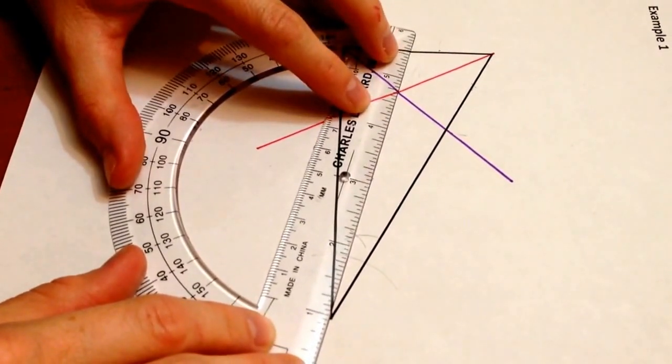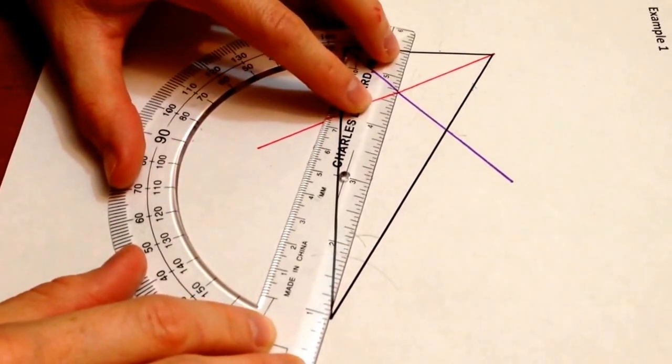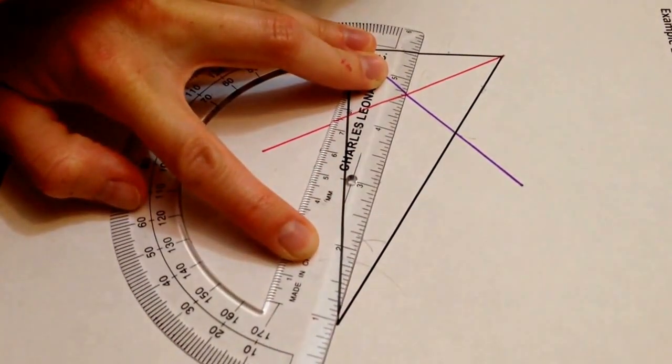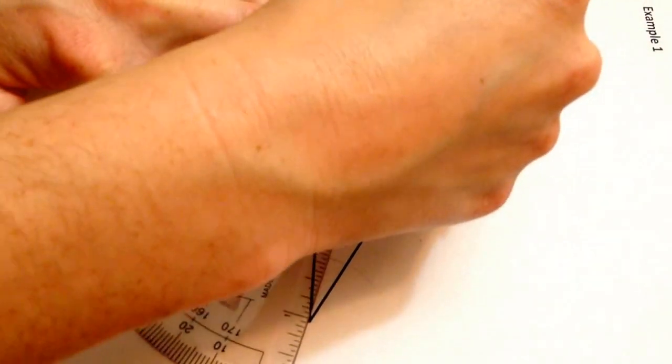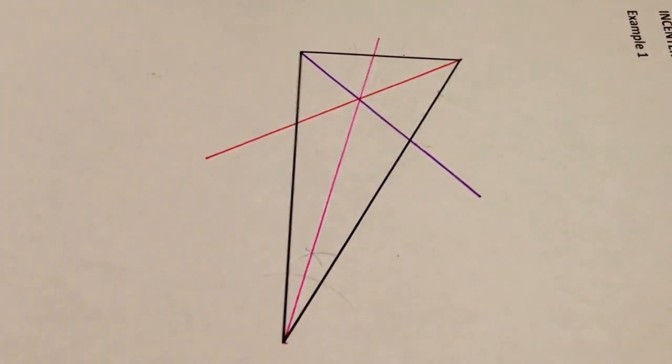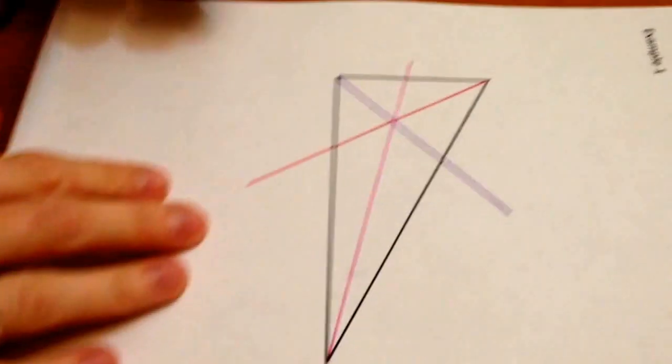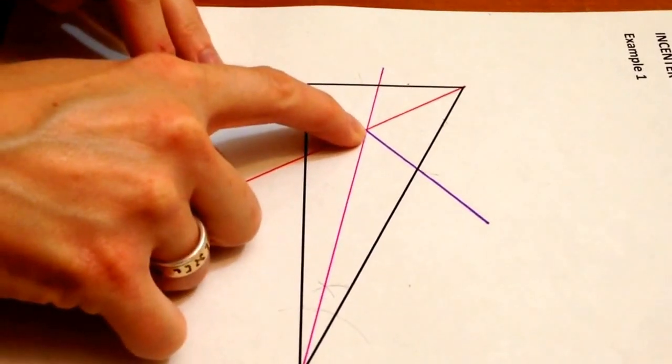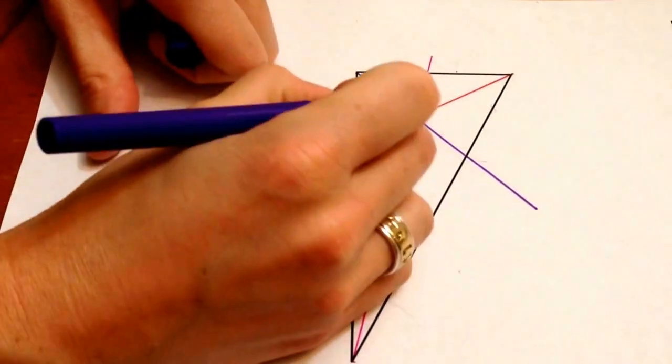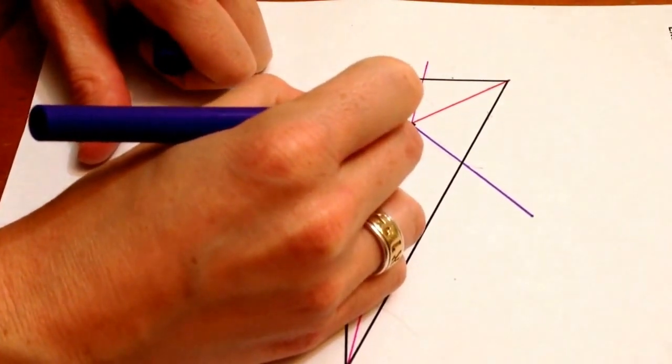I'm going to do this one in pink. Now, once again, this is not perfect, but it's pretty darn close. I think I got closer this time than I did last time. So mark that place where they all three cross.